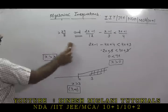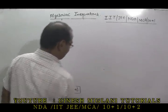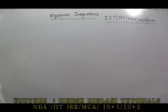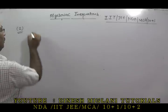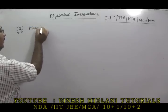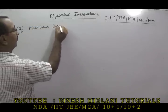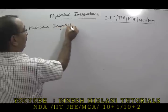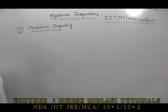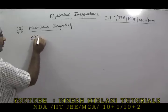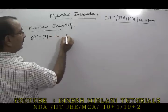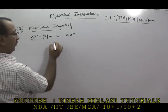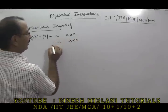Now let us take the second variety of questions, which are based on the concept of modulus inequality. Before going further, let me tell you what the modulus function means. Suppose f(x) = |x|. Modulus of X equals X where X ≥ 0, and modulus of X equals −X where X < 0. Modulus of X equals X if X is positive or zero; if X is a negative number, it will be −X.